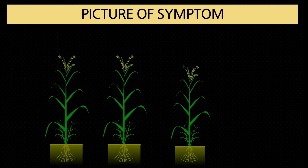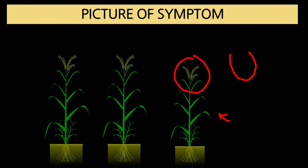Loose smut symptoms appear only in grains or spikelets. In the infected plant, the spikelet emerges from the boot leaf two days earlier. Instead of grain formation, a black powdery mass forms in place of the grain. This black powdery mass is covered by a white papery membrane, which later ruptures and the black powder spreads by wind, infecting other plants.